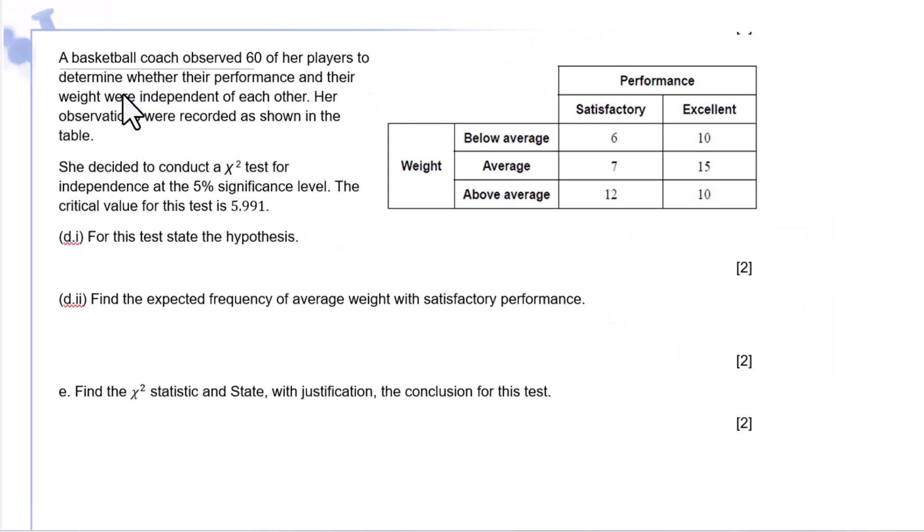A basketball coach observed 60 of her players to determine whether their performance and their weight were independent of each other. Her observations were recorded as shown in the table. She decided to conduct a chi-square test for independence at the 5% significance level. The critical value for this test is 5.991. For this test, state the hypothesis. Independent of is H0, dependent on is H1.